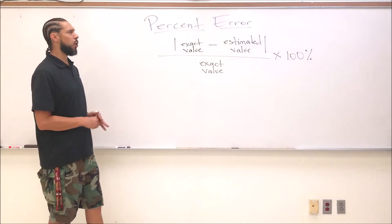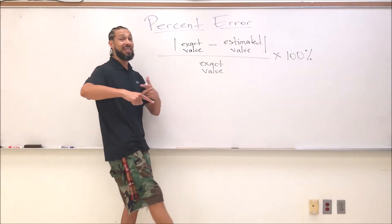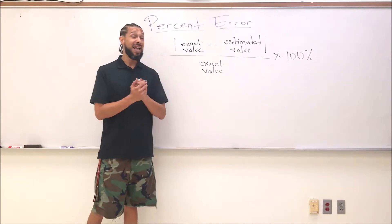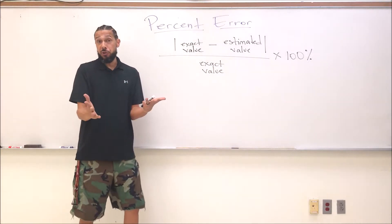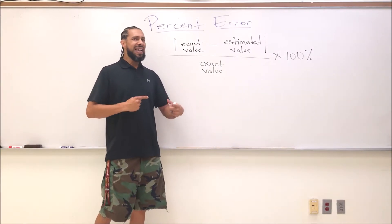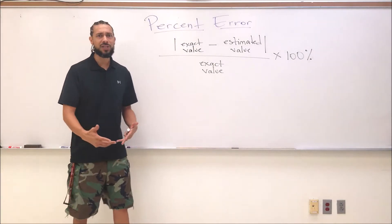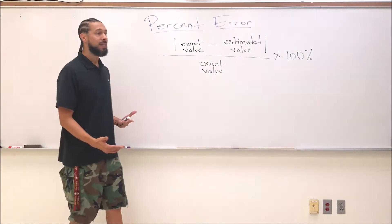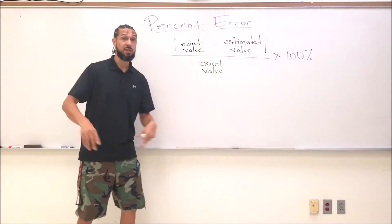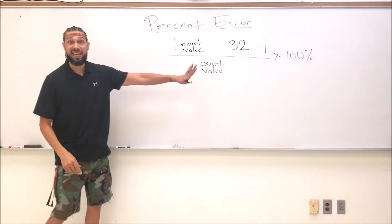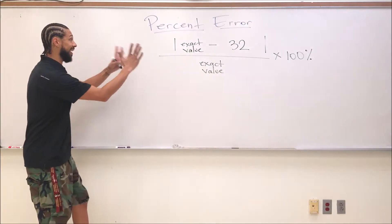Quick situation: let's say I'm guessing ages at a circus, right? A young lady walks up and I guess that she's 32 years old. Would that guess be an estimate or an exact value? Of course that guess would be an estimate, so I would put that 32-year guess right there where it used to say estimated value.